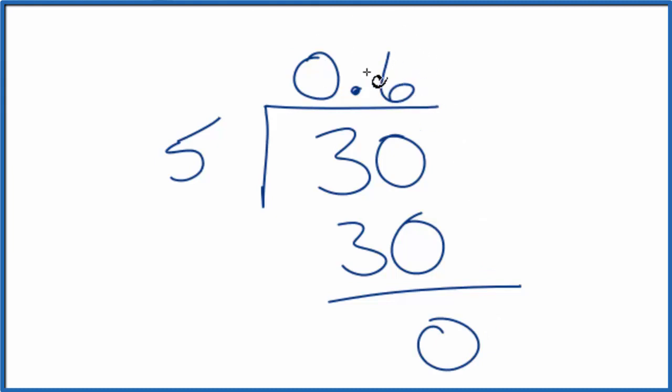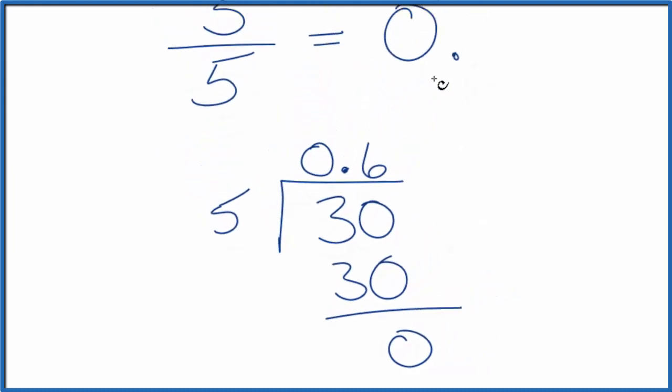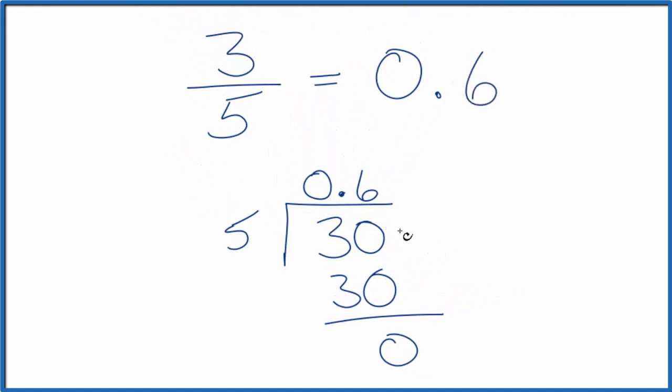0.6 is the decimal form for three-fifths. This is Dr. B converting three-fifths to a decimal — it's 0.6. Thanks for watching.